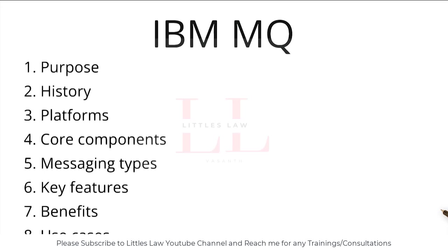IBM MQ supports point-to-point and publish-subscribe messaging types — somewhat related to Apache Kafka, though not completely. Key features include one-time delivery to prevent message loss or duplication, asynchronous messaging for non-time-dependent architecture, data transformation capabilities, a message-driven architecture framework, and support for multiple APIs including JMS and MQ.